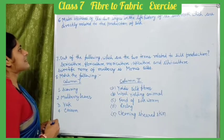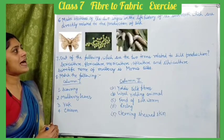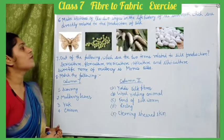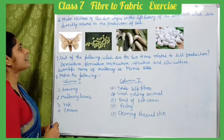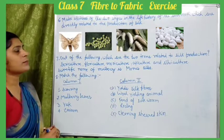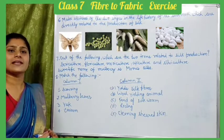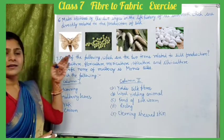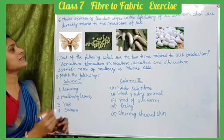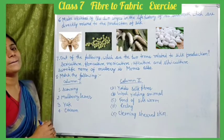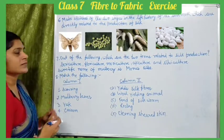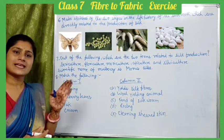Question six asks you to mark the two stages in the life history of the silk moth that are directly related to the production of silk. You can see the diagram on screen and you need to sketch the relevant stages.